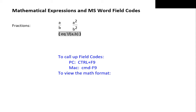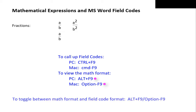To view the actual fraction, on a PC we press Alt+F9; on a Mac it's Option+F9. We use these keys to toggle between the field code mode and the math expression mode. Another way to view the math expression is to cut the entire line of code and paste it.